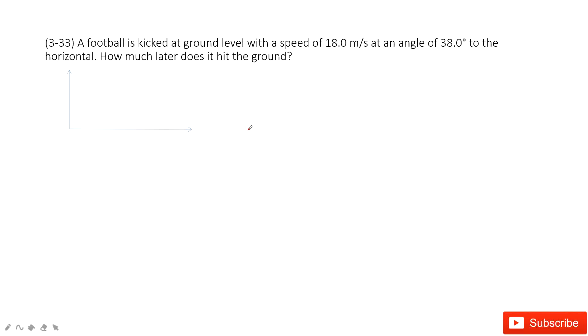In this one, this is still a very simple motion. We can see we have a football kicked at ground level with a speed of 18 meters per second and at an angle. The football is kicked this way and then landed on the ground in this way. And it asks you how much later does it hit the ground?